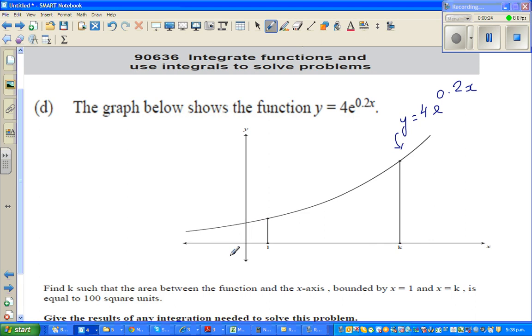Find k, so this is your point k, such that the area between the function and the x-axis is bounded by the line x equals 1 and this line x equals k. So basically they're asking if this area, this area under the curve, the x-axis, the line x equals 1, x equals k.